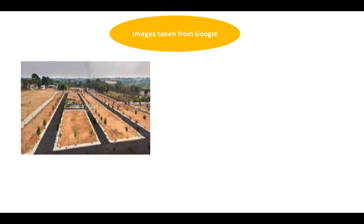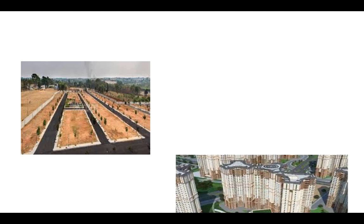Before I start, let me talk about a normal example, then we will jump into the technical definition. You can see this is a land — a plotted area — so you can build a house here based on your requirement. You can customize however you want, but the problem is you need to do everything from scratch, plus you need some expertise and guidance in order to build a proper house.